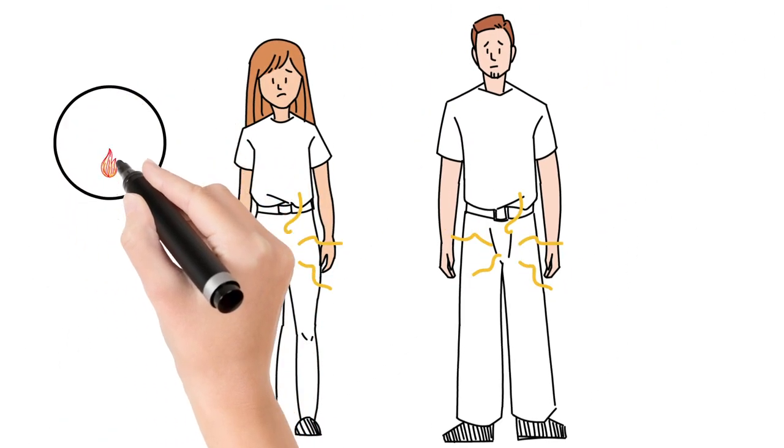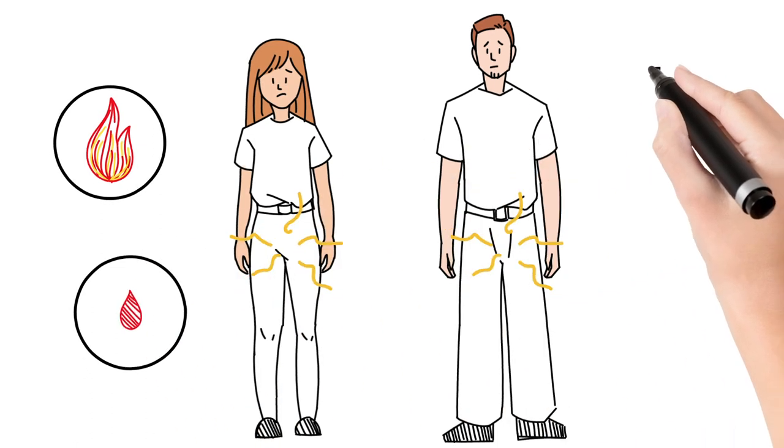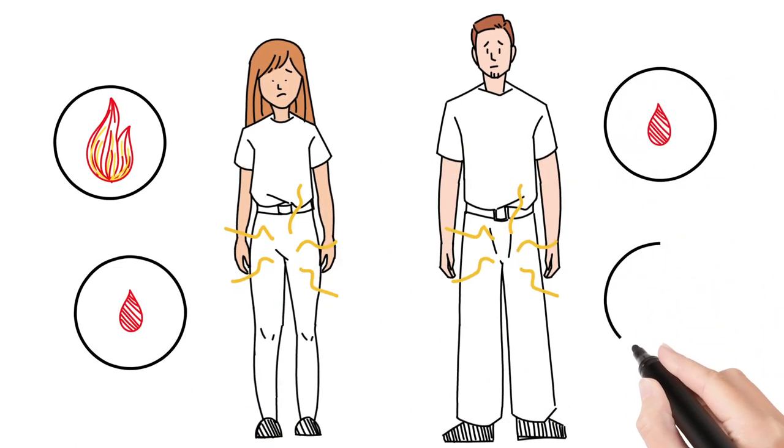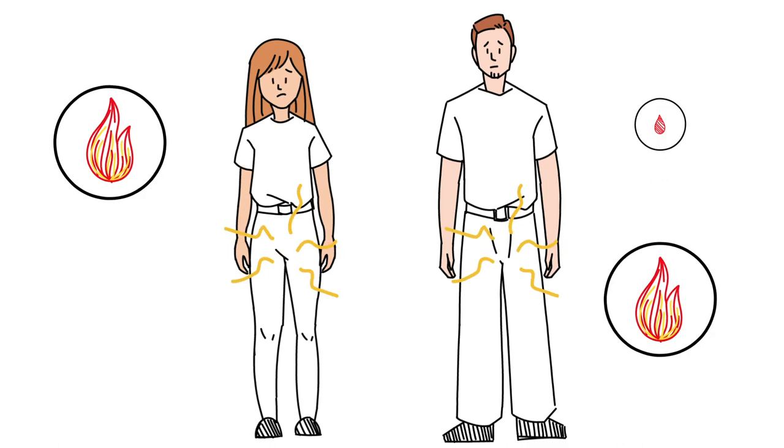When symptomatic, gonorrhea causes a burning sensation, itching, discomfort, and an unusual discharge or bleeding. However, many times it is asymptomatic.